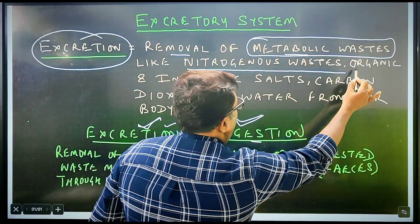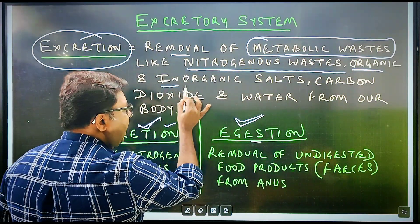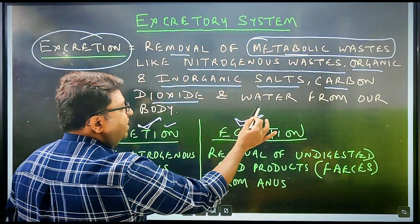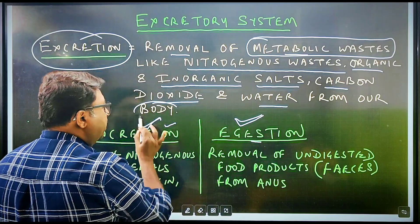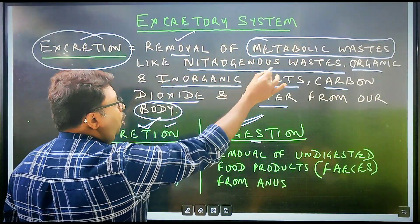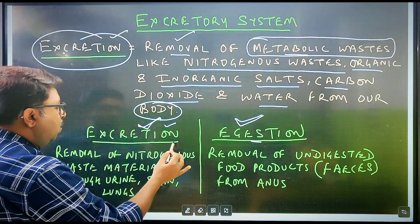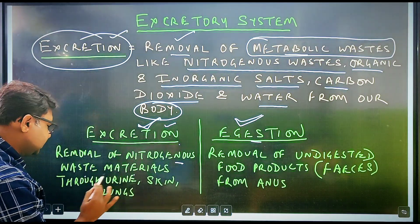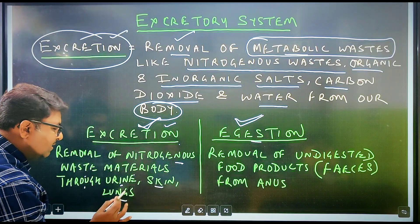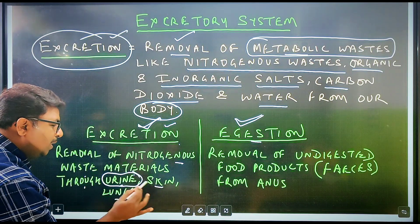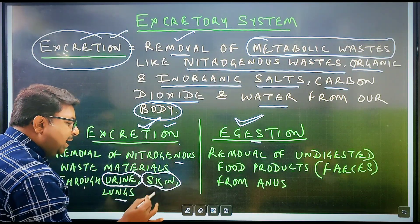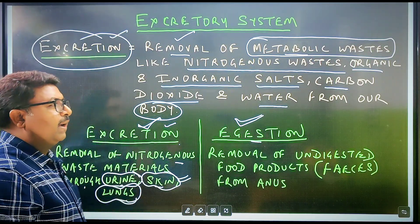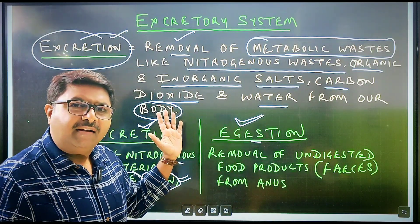Excretion involves the removal of organic waste and inorganic salts, carbon dioxide and water from our body. So the removal of all these together makes excretion. Excretion is the removal of nitrogenous waste materials through urine, skin, and lungs. That means urine, skin — the excretion product comes from the skin — and lungs is also an excretion organ. So these are the main aspects of excretion.